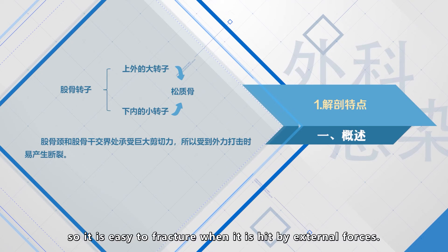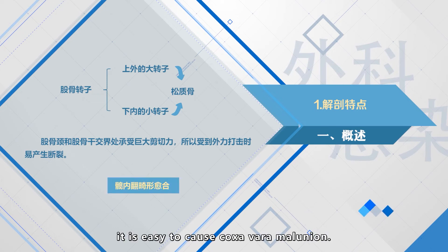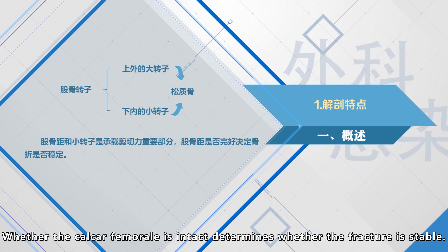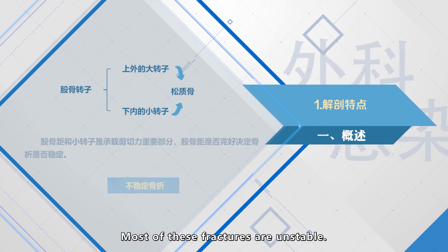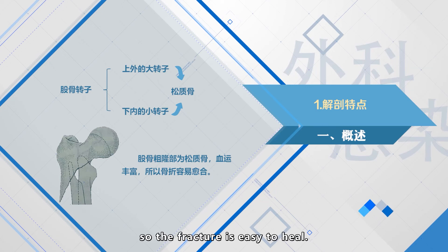The junction between the femoral neck and the femoral shaft bears huge shear force, so it is easy to fracture when hit by external forces. If not treated in time, it is easy to cause coxa vara malunion. The causal femoral and the lesser trochanter are important parts to bear the shear force. Whether the causal femoral is intact determines whether the fracture is stable. Most of these fractures are unstable.